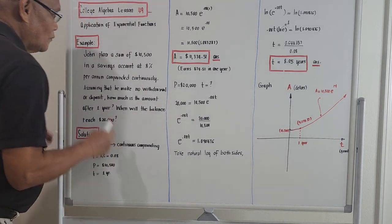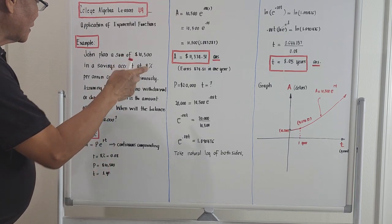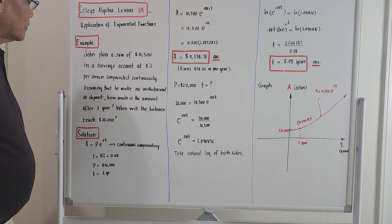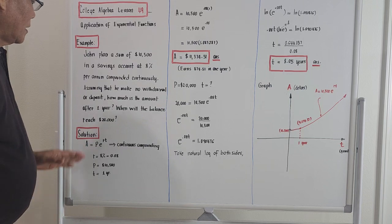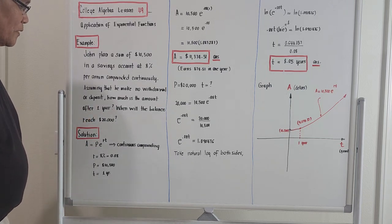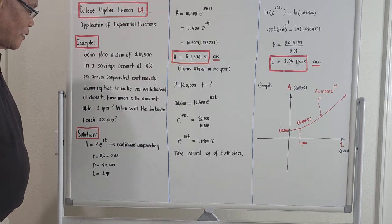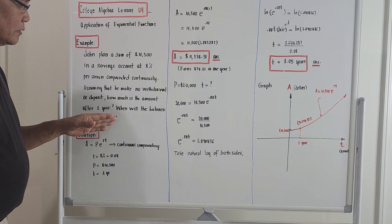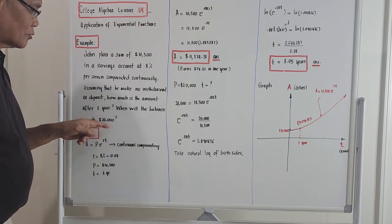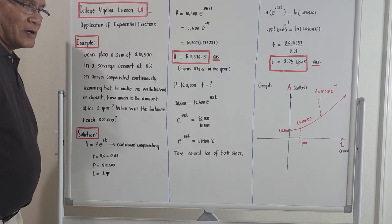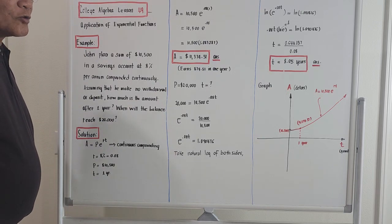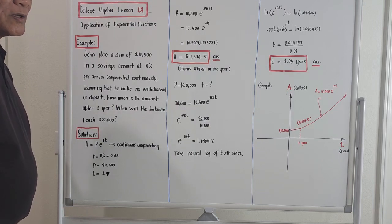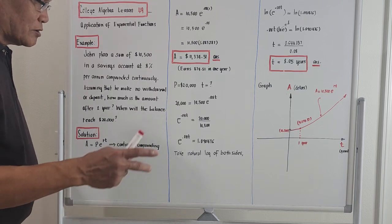John places a sum of ten thousand five hundred dollars in his savings account at eight percent per annum, compounded continuously. Assuming that he makes no withdrawal or deposit, how much is the amount after one year? And the next question is: when will the balance reach twenty thousand dollars? This problem has real relevance in real life and is actually very important.